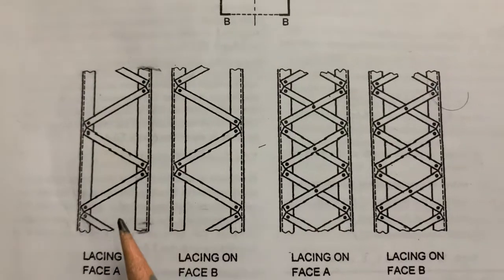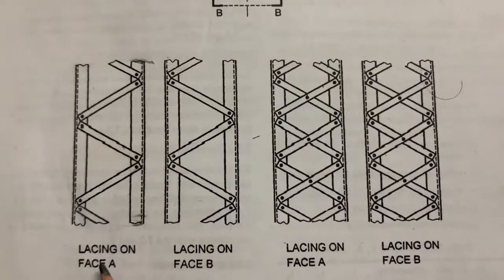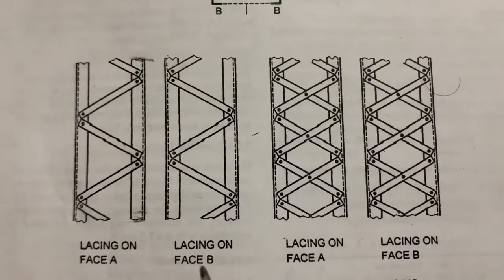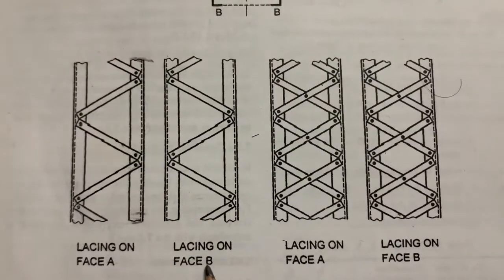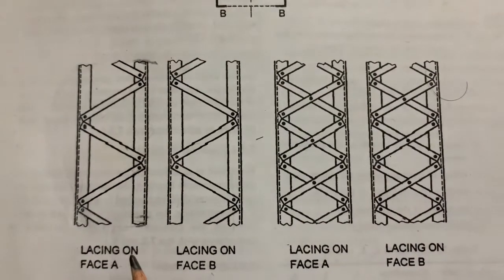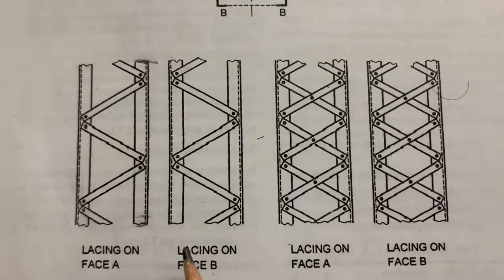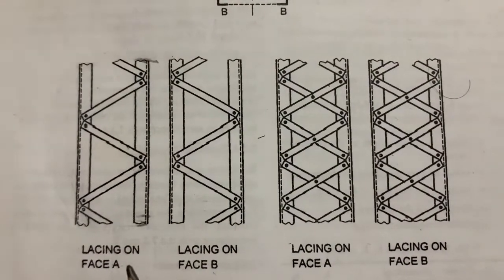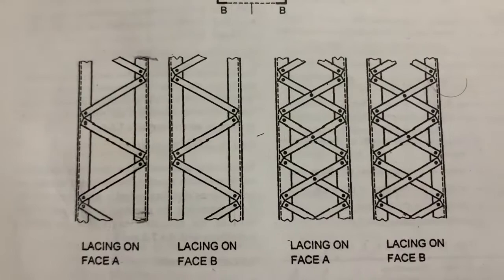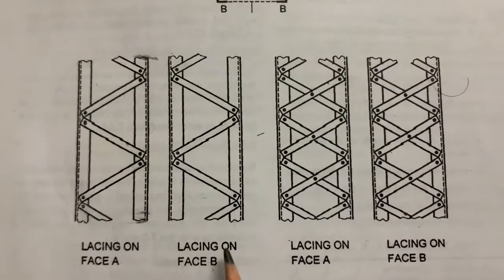Next, in a single lacing system, the direction of the lacing on opposite faces — face A and face B — should be the reverse of the other, but they should not be mutually opposite. That is the arrangement we need to follow.